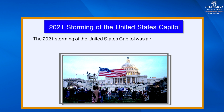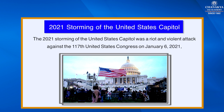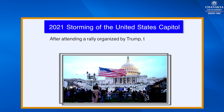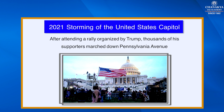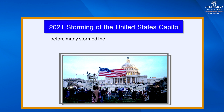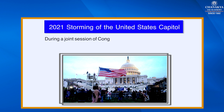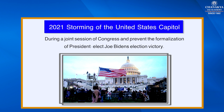The 2021 storming of the United States Capitol was a riot and violent attack against the 117th U.S. Congress on January 6, 2021, carried out by supporters of U.S. President Donald Trump in an attempt to overturn his defeat in the 2020 presidential election. After attending a rally organized by Trump, thousands of his supporters marched down Pennsylvania Avenue before many stormed the U.S. Capitol in an effort to disrupt the Electoral College vote count during a joint session of Congress and prevent the formalization of President-elect Joe Biden's election victory.